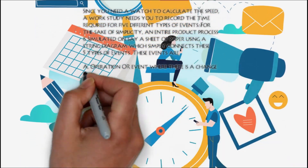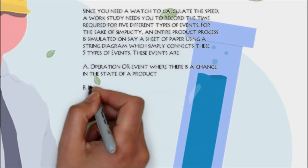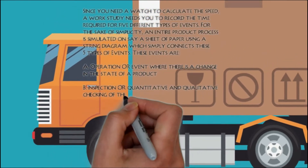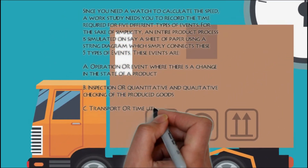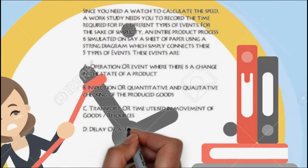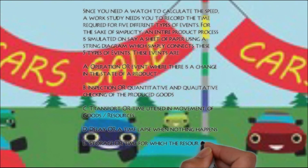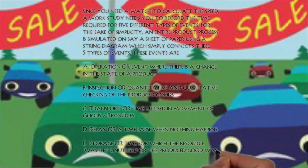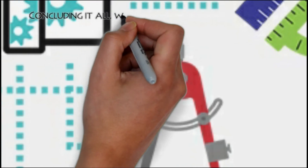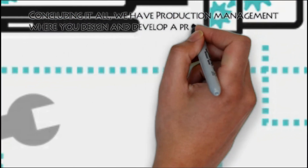These events are: A) operation — an event where there is a change in the state of a product; B) inspection — quantitative and qualitative checking of the produced good; C) transport — time utilized in movement of goods and resources; D) delay — a time lapse when nothing happens; E) storage — time for which the resource was left unutilized or the produced good was unsold.